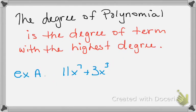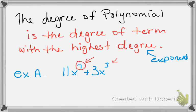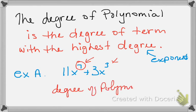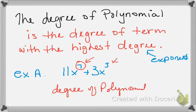The degree of a polynomial is the degree of the term with the highest degree. Degree means exponent — we want to know which exponent is the highest. Looking at an example with exponents 7 and 3, the highest is 7, so the degree of polynomial is 7.